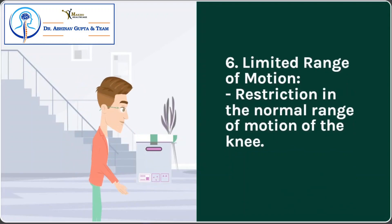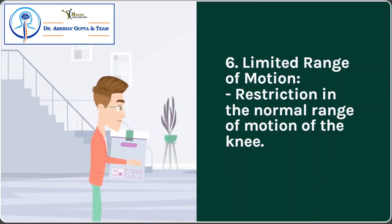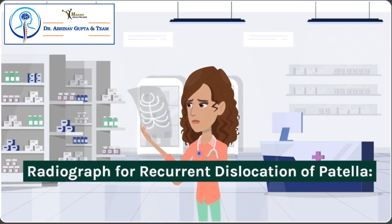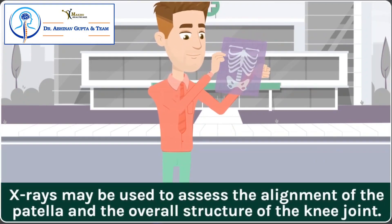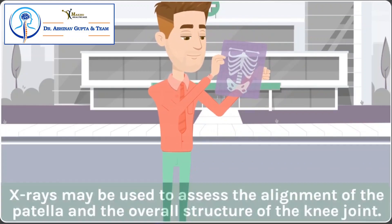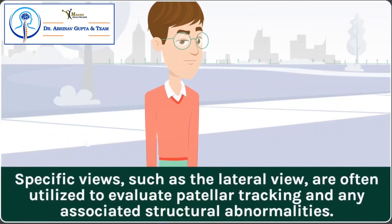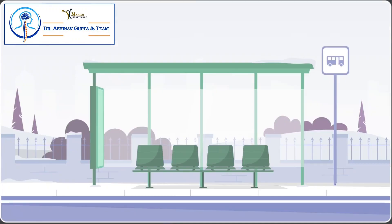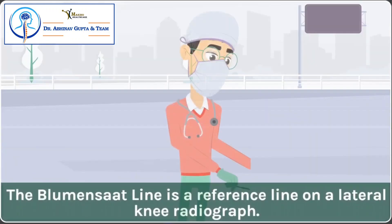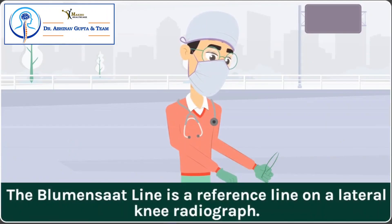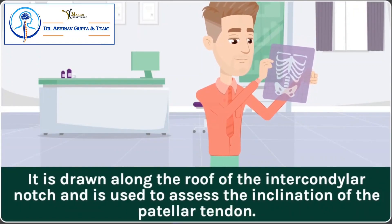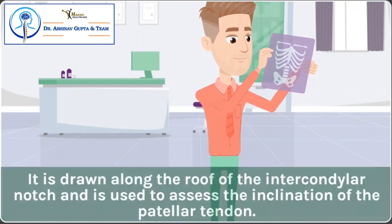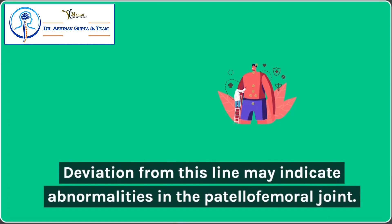6. Limited Range of Motion – restriction in the normal range of motion of the knee. Radiograph for Recurrent Dislocation of Patella: X-rays may be used to assess the alignment of the patella and the overall structure of the knee joint. Specific views, such as the lateral view, are often utilized to evaluate patella tracking and any associated structural abnormalities. The Blumensaat Line is a reference line on a lateral knee radiograph, drawn along the roof of the intercondylar notch, used to assess the inclination of the patella tendon. Deviation from this line may indicate abnormalities in the patellofemoral joint.